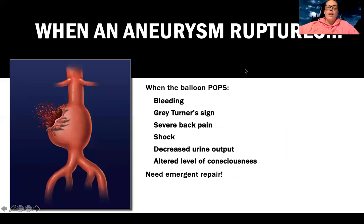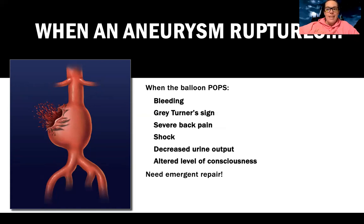When an aneurysm ruptures, think of what happens when that balloon pops. This is a high-pressure arterial system, so when it pops, the patient will bleed — and can bleed to death in a short period of time if not treated. They can have Grey Turner sign, which is a sign of internal bleeding.